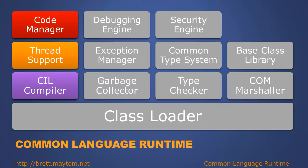.NET languages that are Common Language Infrastructure compliant compile to a common intermediate language. When applications are launched, the Code Manager will load the application and then use the CIL compiler to compile the code to native code that is supported on that particular platform. The CIL compiler is also known as the just-in-time compiler.